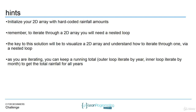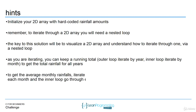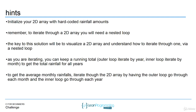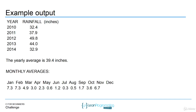As you're getting the total rainfall, you can print out the yearly total as well. Then, after you exit that loop, you can print out the yearly average. Then you're going to need another loop to display the monthly average. To do that, have an outer loop for each month and the inner loop goes through each year — this will give you the monthly averages. So the yearly calculations go in the first loop, and the monthly averages go in the second.